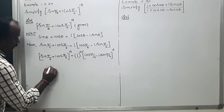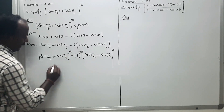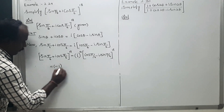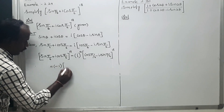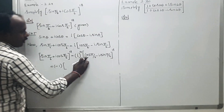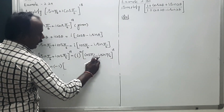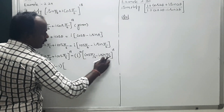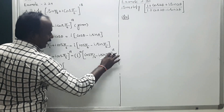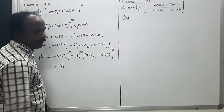Now, i^18 = −1. By De Moivre's theorem, (cos θ − i sin θ)^n = cos nθ − i sin nθ.